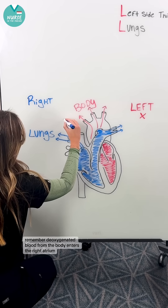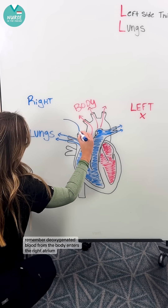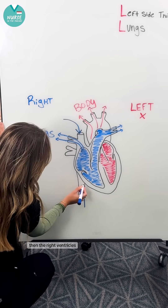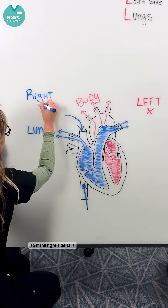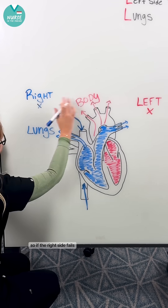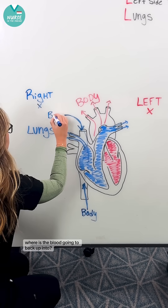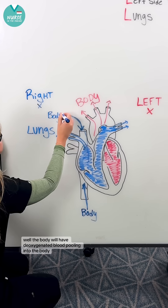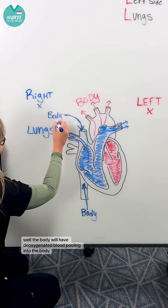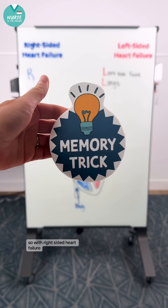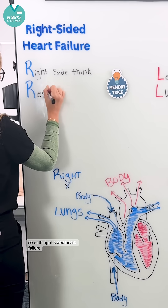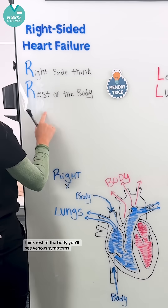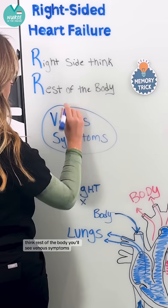Next, remember deoxygenated blood from the body enters the right atrium, then the right ventricle. So if the right side fails, where is the blood going to back up into? Well, the body will have deoxygenated blood pooling into the body. So with right-sided heart failure, think rest of the body — you'll see venous symptoms.